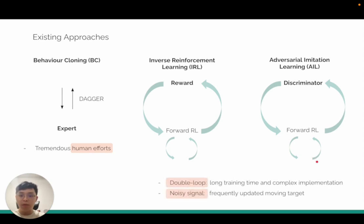The first one is the double loop structure. It has a long training time and complex implementation because of this double loop. Another reason is the noisy signal. Because the signal is learned and it's not perfect, the learning signal can be quite noisy and it's frequently updated, so it's also a moving target. Using this learned signal to learn the inner policy can be quite challenging.